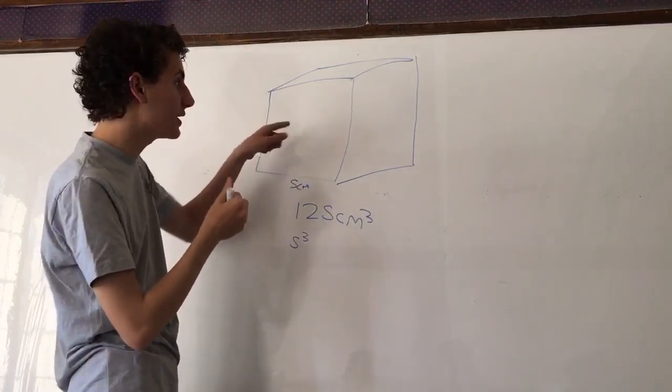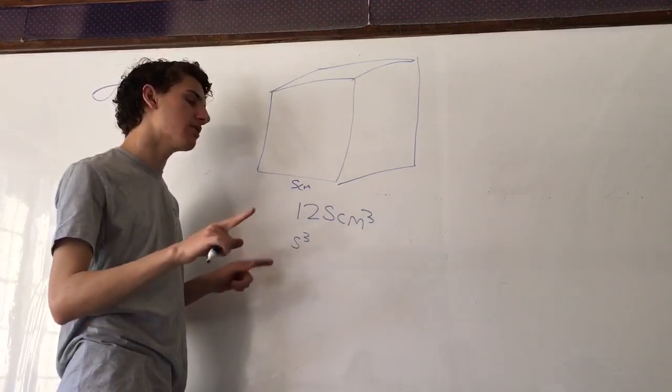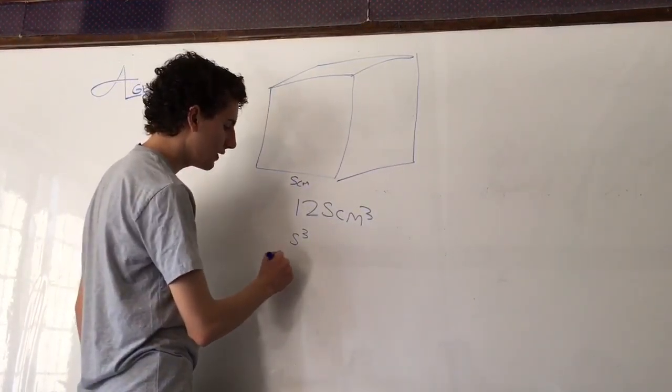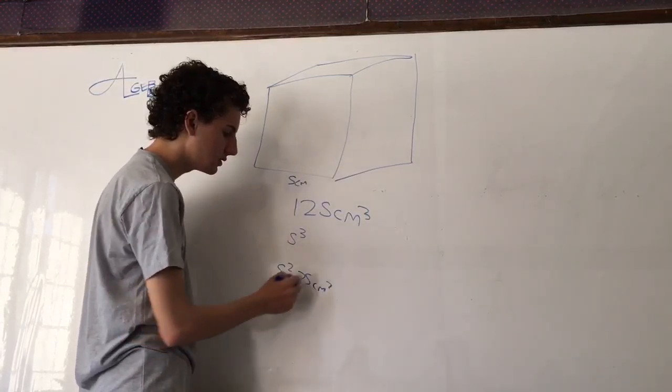So we have to find the area of one of the sides. We know that areas of sides of cubes are just the squares of the side lengths. So 5 squared equals 25 centimeters squared. That's the answer. Thank you.